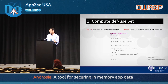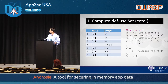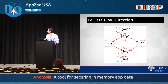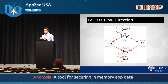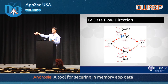Step one is computing the def and use sets for each statement. The def set contains variables defined in that statement; the use set contains variables used. For the last statement, x is in the def set and z in the use set, and so on. Once we have def and use sets, we compute live variable entry and exit sets using backward flow analysis — computing in reverse order of program execution, starting with LV_exit of the last statement set to ∅.